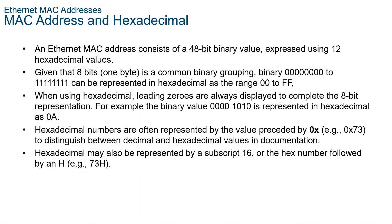Now let's talk about the Ethernet MAC address. In networking, IPv4 addresses are represented using decimal base 10 and binary base 2 number systems. IPv6 addresses and Ethernet addresses are represented using hexadecimal base 16. To understand hexadecimal, you must first be familiar with binary and decimal. The hexadecimal numbering system uses the numbers 0 to 9 and A to F. An Ethernet MAC address consists of a 48-bit binary value. Hexadecimal is used because a single hexadecimal digit represents 4 binary bits; therefore, a 48-bit Ethernet MAC address can be expressed using only 12 hexadecimal values.